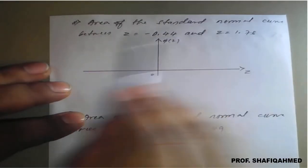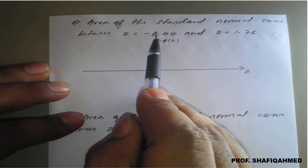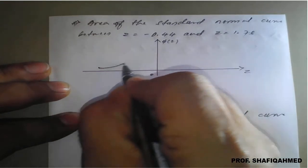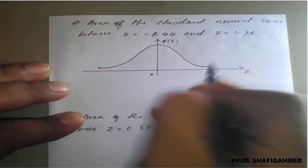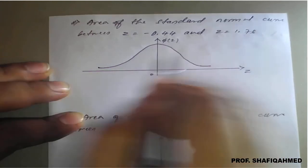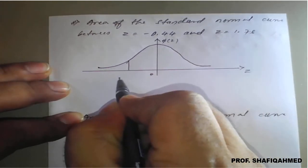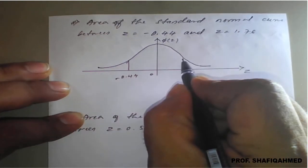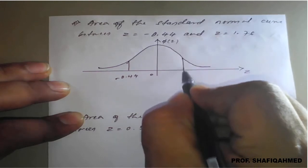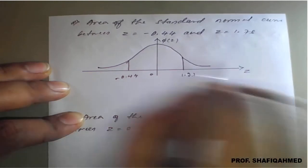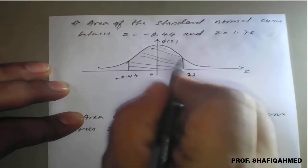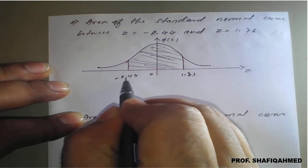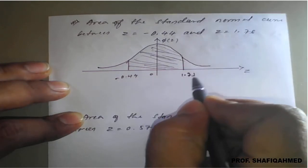Next, find the area of the standard normal curve between z equal to minus 0.44 and z equal to 1.76. Drawing the curve: z equal to minus 0.44 is on the left side and z equal to 1.76 is on the right side. We draw vertical lines at both points and shade the complete area between them. The function φ(z) is lying between minus 0.44 to 1.76.